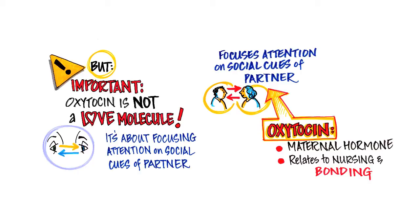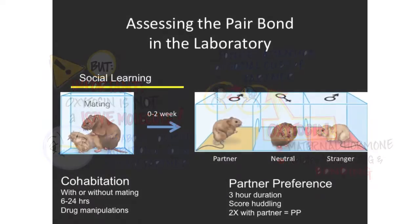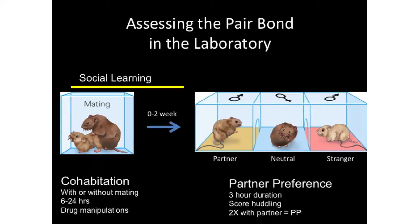We also know from animal studies that oxytocin is involved in the formation of the bond between the mother and the offspring. How do we study whether two voles are bonded or not? We have a test we call the partner preference test. What we do is put a male and female together, and during this time we can allow them to mate, prevent them from mating, or give them various drugs to see what molecules are involved in this process. Then we test them on the partner preference test.